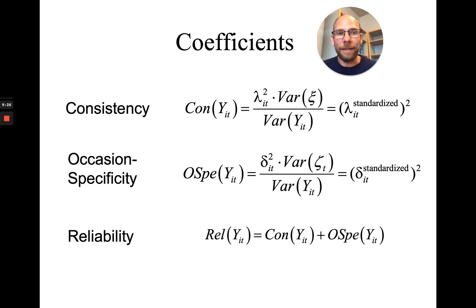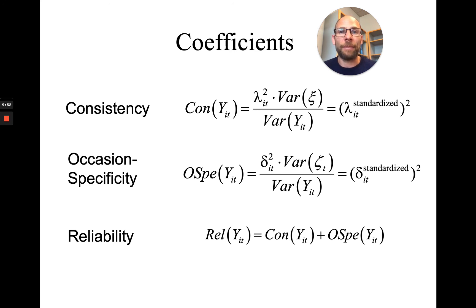In addition, you can also compute reliability. In latent state trait theory, reliability is the sum of consistency plus occasion specificity for a given measure. This shows that latent state trait theory is more inclusive in its definition of reliability than classical test theory, where reliability is thought of as consistency only — for example, a test-retest correlation. In latent state trait theory, a measure could be low in consistency but still highly reliable if occasion specificity is high, such as with a measure of mood states or hormones. A measure of something more state-like can also be reliable, and this is included in latent state trait theory.